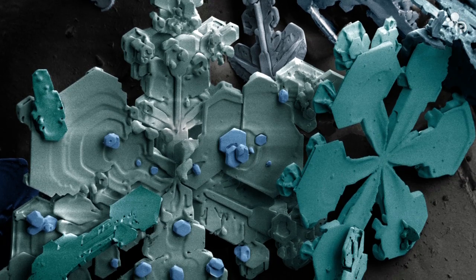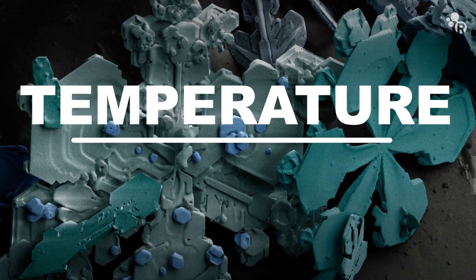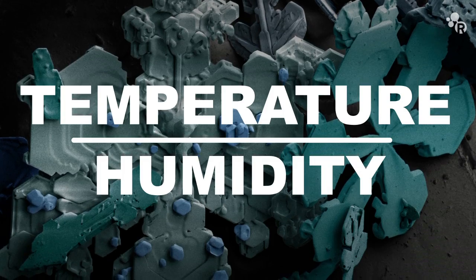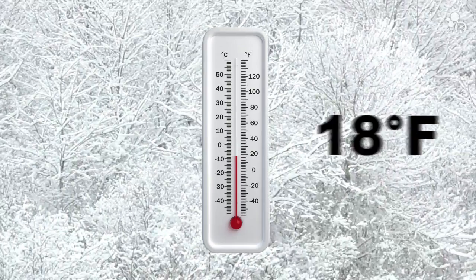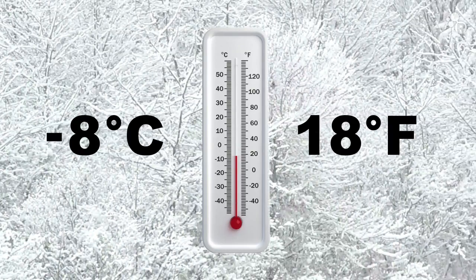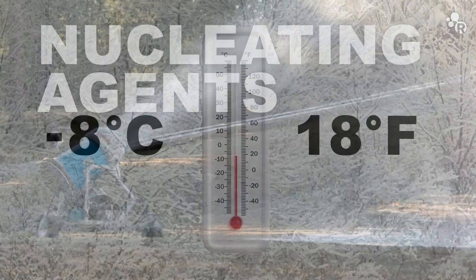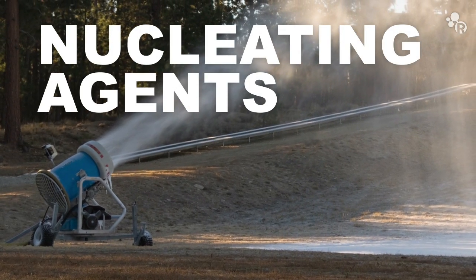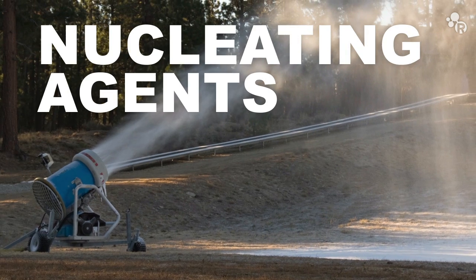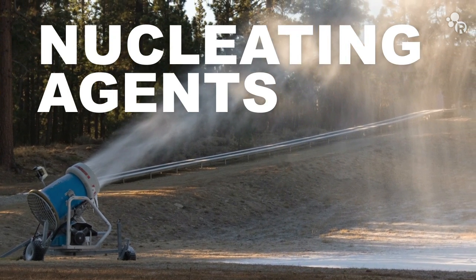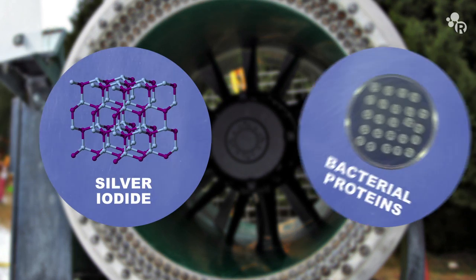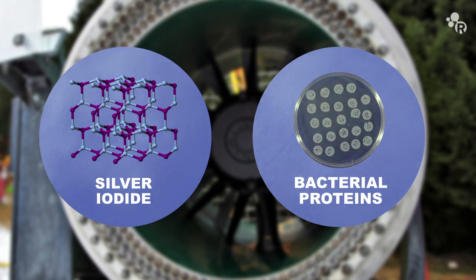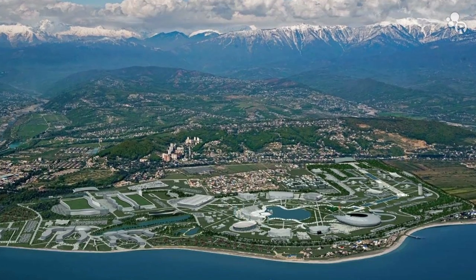Another important component to making snow is to make sure that you've got the right combination of temperature and humidity. Lower humidity means that snow can be formed at higher temperatures. With untreated water, a temperature of about 18 degrees Fahrenheit or about negative 8 degrees Celsius is needed. If the temperature isn't cold enough, added materials are used for the nucleation. Just like with real snow, nucleating agents are extremely important for artificial snow. So in modern snow guns, there are a lot of different types used, including silver iodide or proteins made by special bacteria. These additives are crucial starting points for ice crystal formation, especially when the temperatures are above freezing like they are in Sochi.